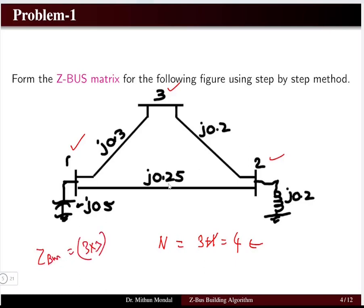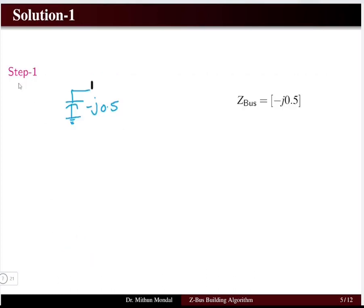In the first step, we add a new bus to the reference bus with element -j0.5. There will be only one column and one row, and that element will be equal to -j0.5.